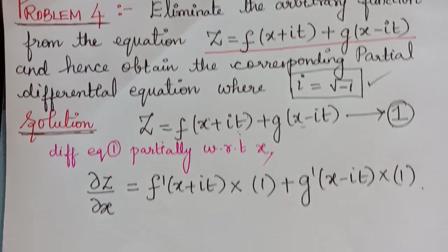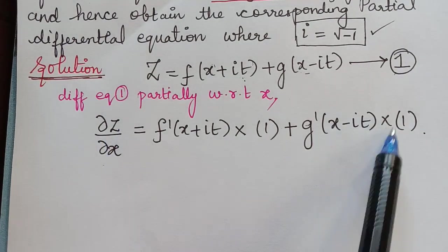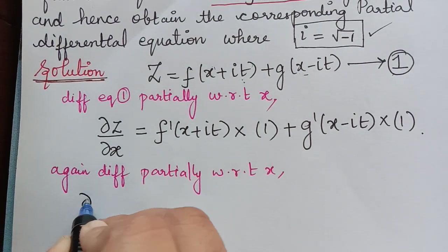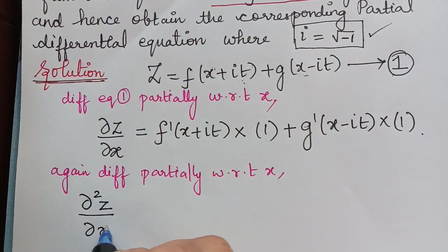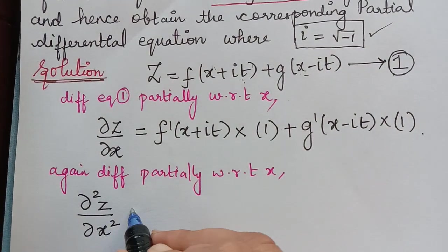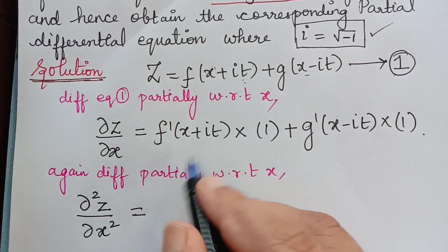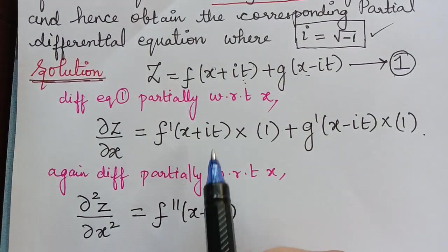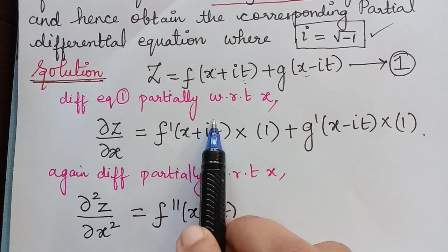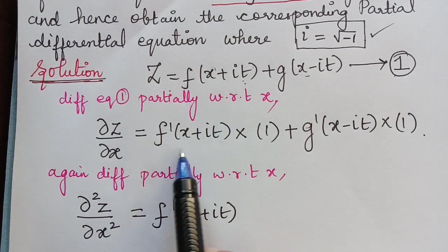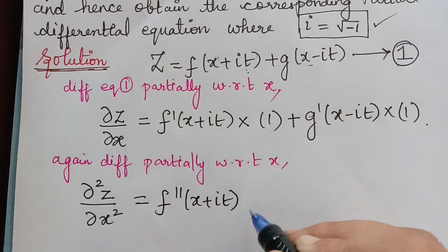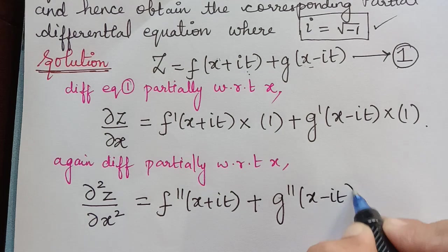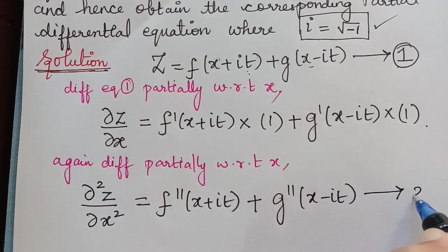As the next step, we have to again differentiate this partially with respect to x. When we differentiate again, we get dou squared z by dou x squared equal to f''(x + it) multiplied with 1, since the differentiation of x is 1 and the differentiation of it is 0. Similarly, g'(x - it) differentiates to g''(x - it) multiplied with 1. We mark this as equation 2.